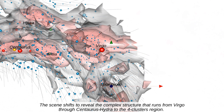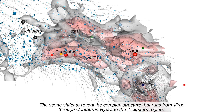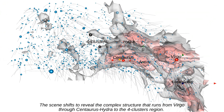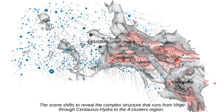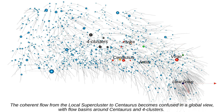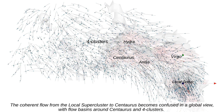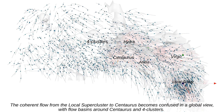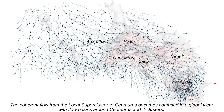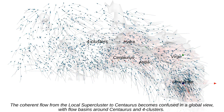The scene shifts to reveal the complex structure that runs from Virgo through Centaurus-Hydra to the four-clusters region. The coherent flow from the local supercluster to Centaurus becomes confused in a global view, with flow basins around the Centaurus and four clusters.